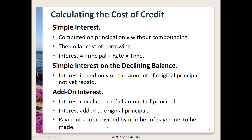For add-on interest, if you pay off the loan in one payment it produces the same annual percentage rate as the simple interest method. However, if you pay in installments, your actual rate of interest will be higher than the stated rate. Interest rates on this type of loan do not decrease as the loan is repaid, so the longer you take to repay, the more interest you'll pay.